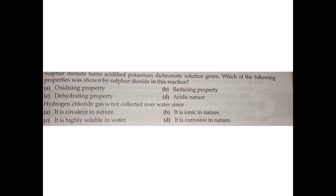Question number ten: hydrogen chloride gas is not collected over water because — A) it is covalent in nature, B) it is ionic in nature, C) it is highly soluble in water, D) it is corrosive in nature. The correct answer is option C: it is highly soluble in water.